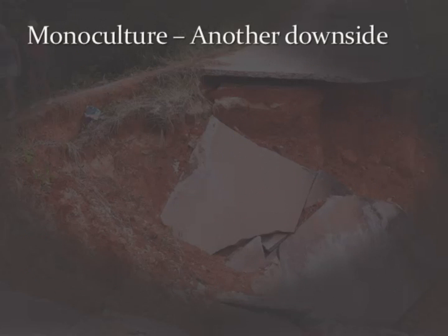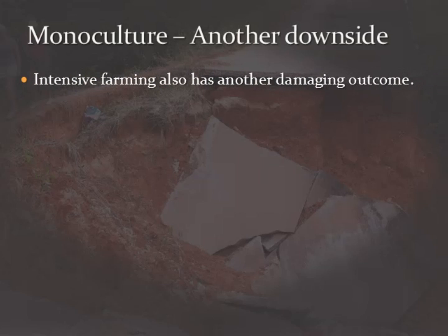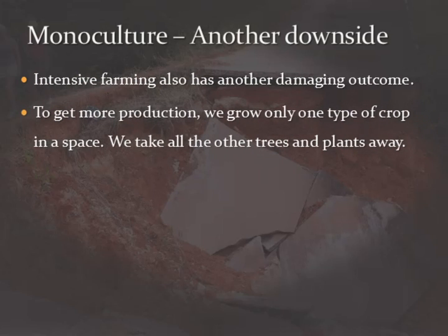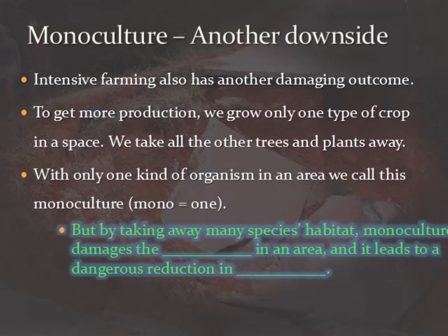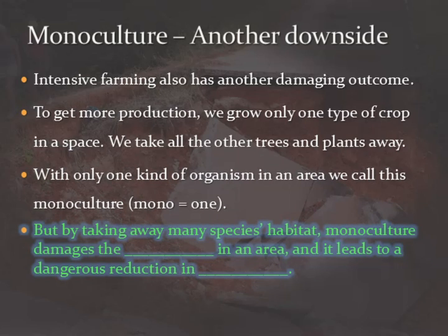There is another downside of intensive farming, and that is what is known as monoculture. To get more production we take all of the species away from a space except the one we want to grow. With only one type of organism — this is what is called monoculture — it causes great damage to the ecosystems in an area.